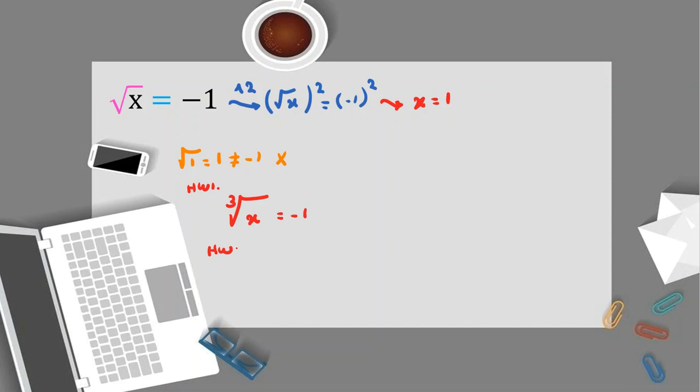Homework number two: try to solve fourth root of x equals negative one. Try to solve these two problems and comment your answers right below this video.